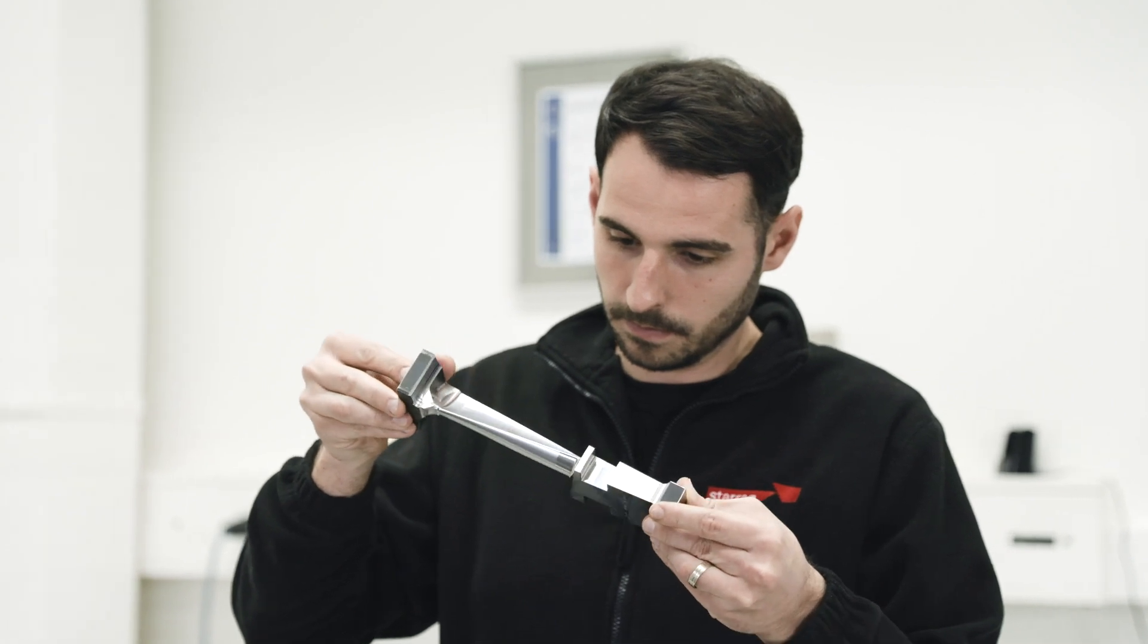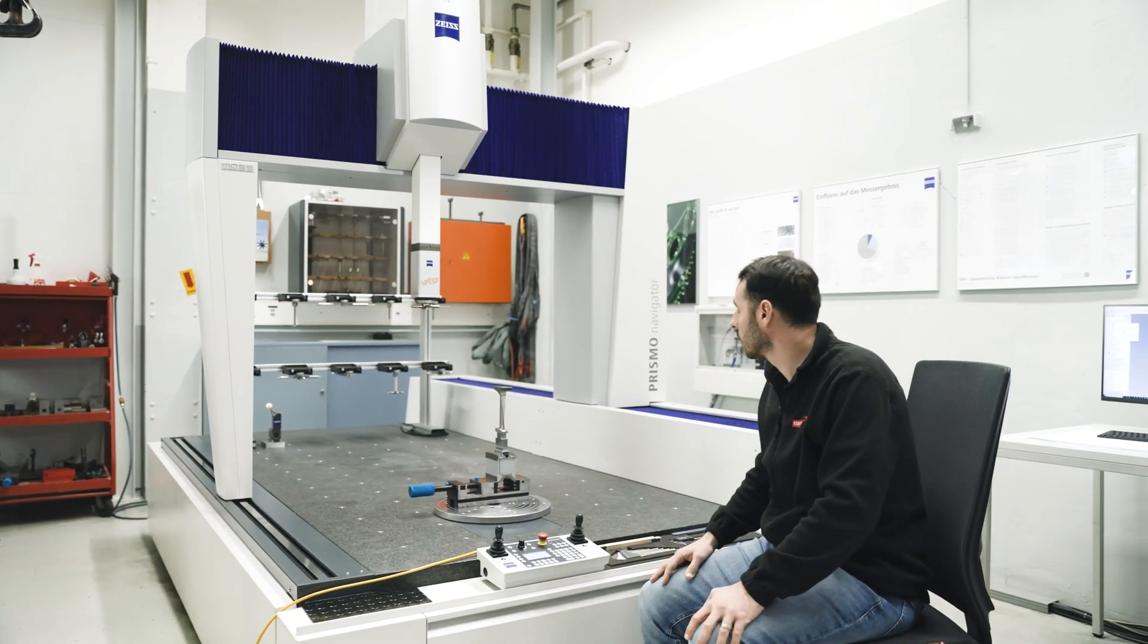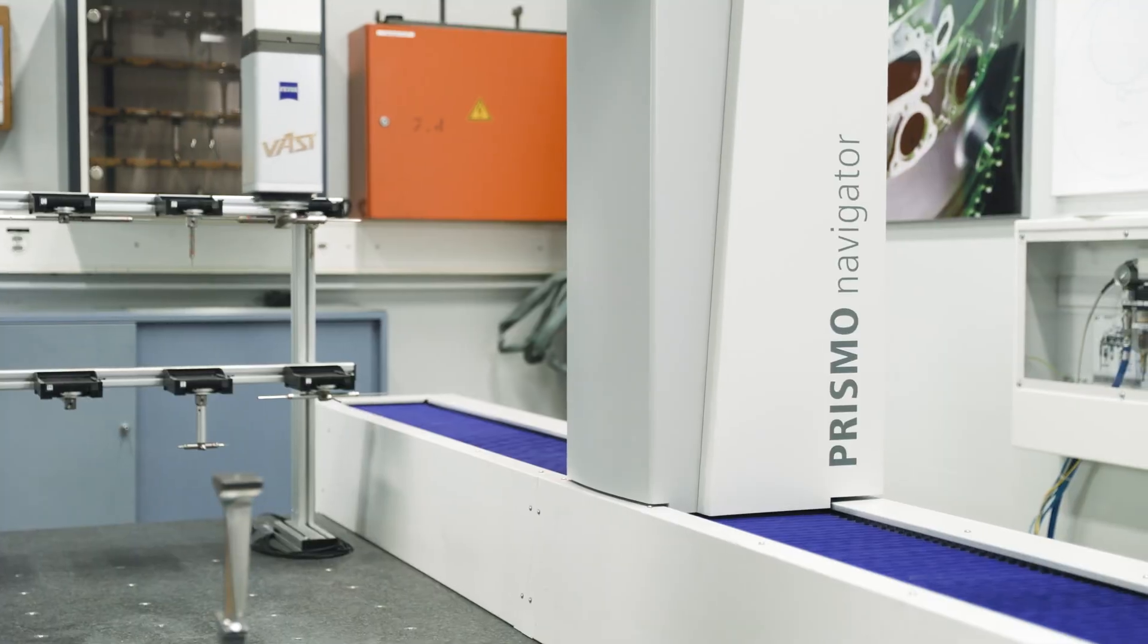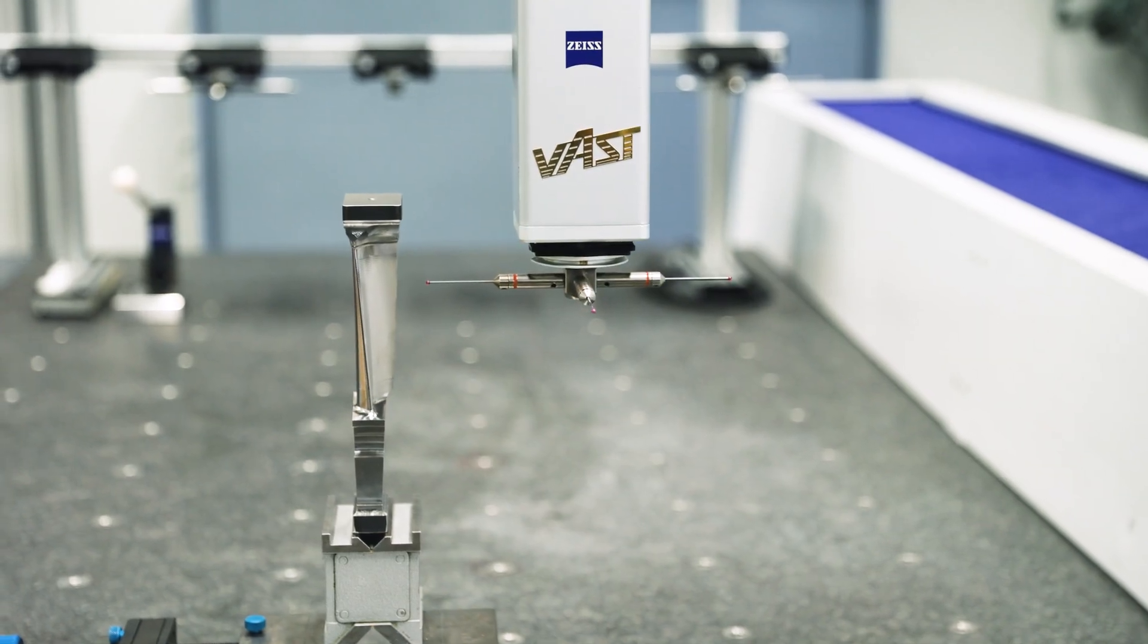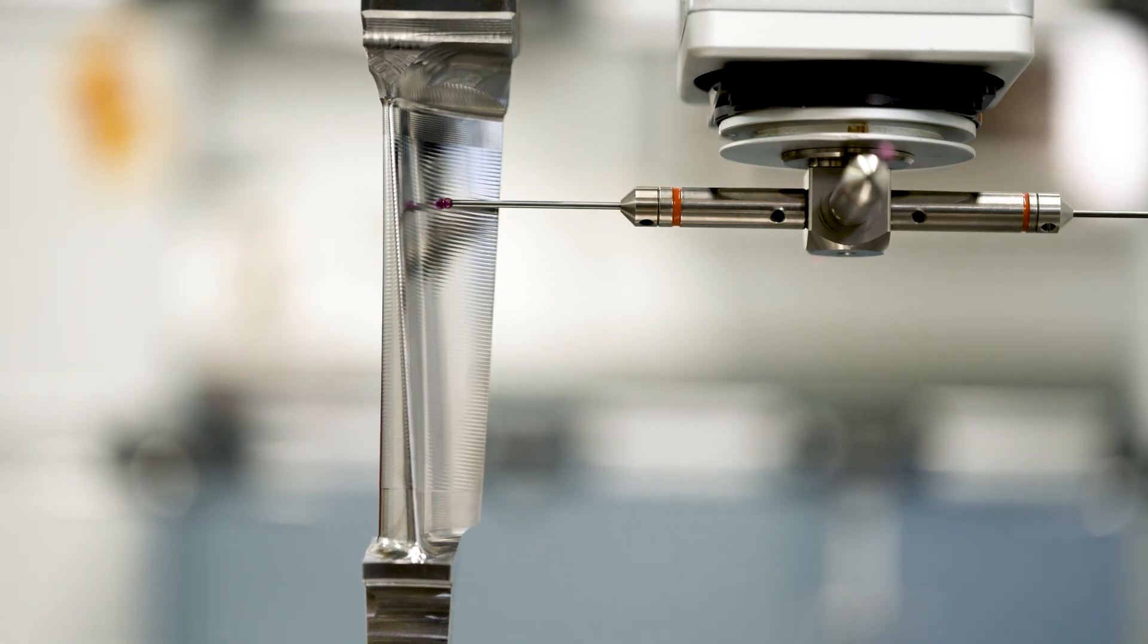Since one airplane turbine has more than a thousand blades, which all have to be measured, that takes time. Until now, Starach has used this Zeiss Prismo for its measurements. The measurement arm moves around the object to capture precise measurement data.